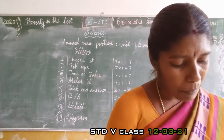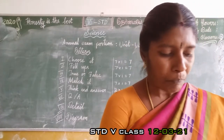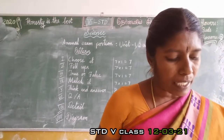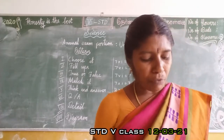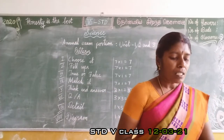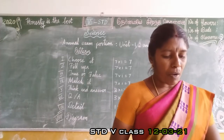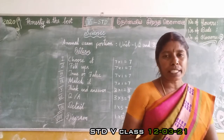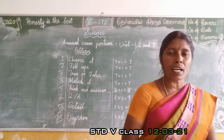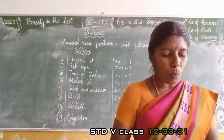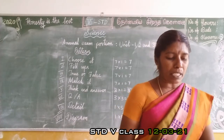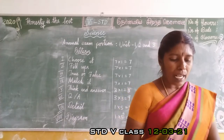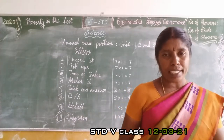Name some of the airborne diseases. You can write any 5. Some of the airborne diseases are: common cold, whooping cough, diphtheria, tuberculosis, influenza, mumps, and chickenpox.